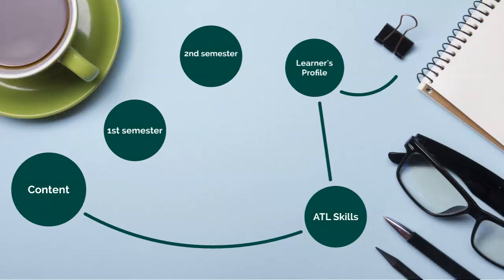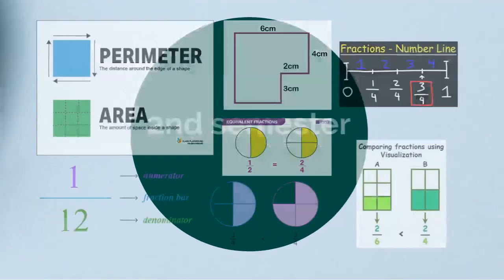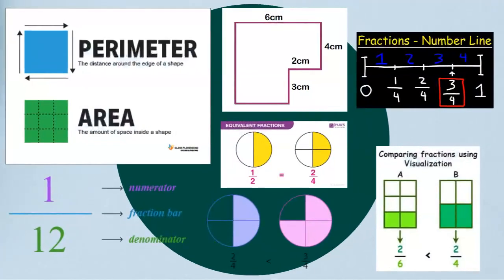We also skipped an important part — we will learn about equivalent fractions, which are fractions that are equal. We will also learn how to find area and perimeter in regular and irregular shapes.